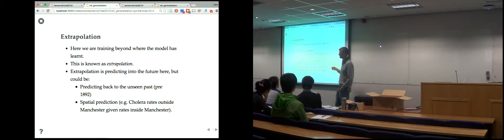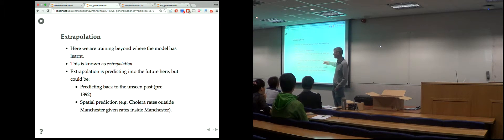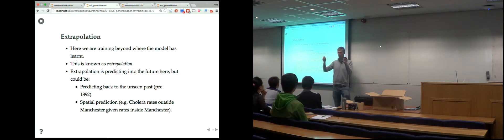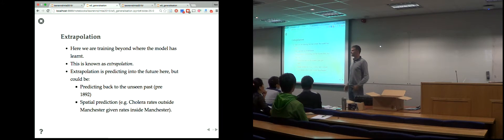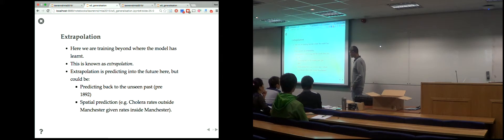Extrapolation is something everyone wants — knowing what the stock market price is going to be tomorrow. But it's very, very hard. In one dimension, it's the case where you don't have data either side of the region you're predicting in. In two dimensions it's also easier to think about — outside some spatial region. In higher dimensions, you can find it there too.